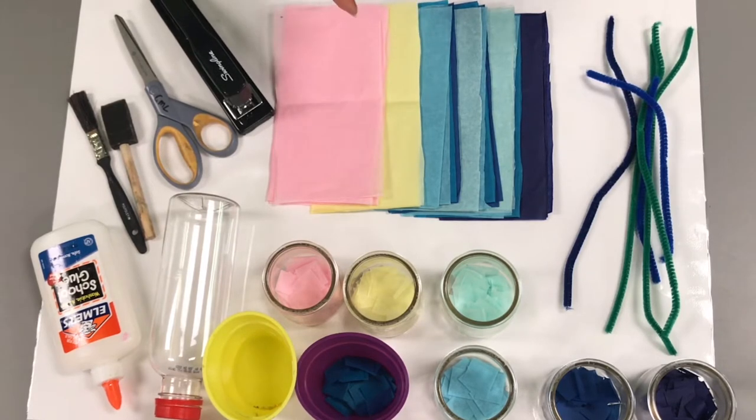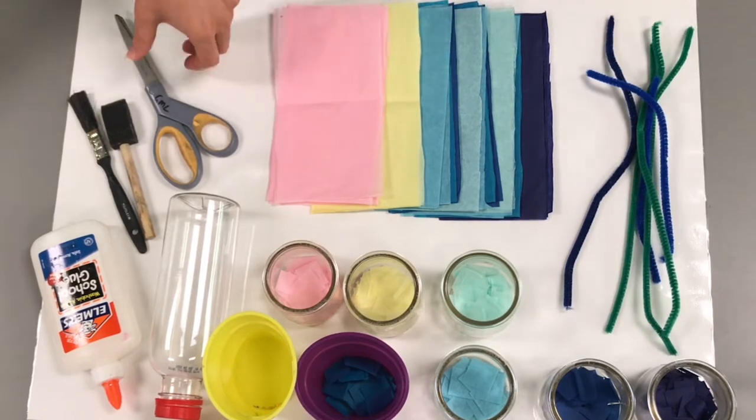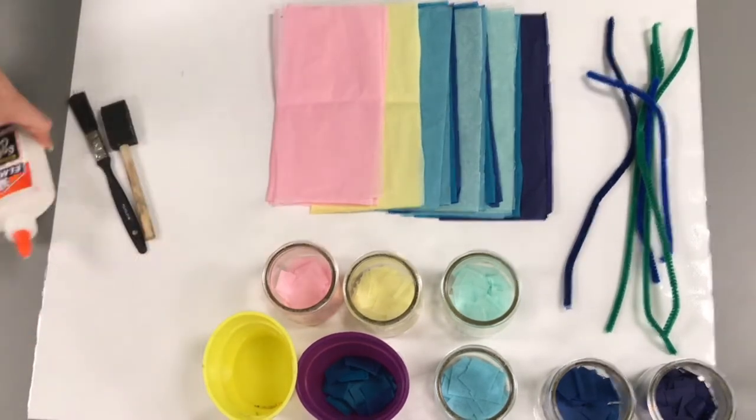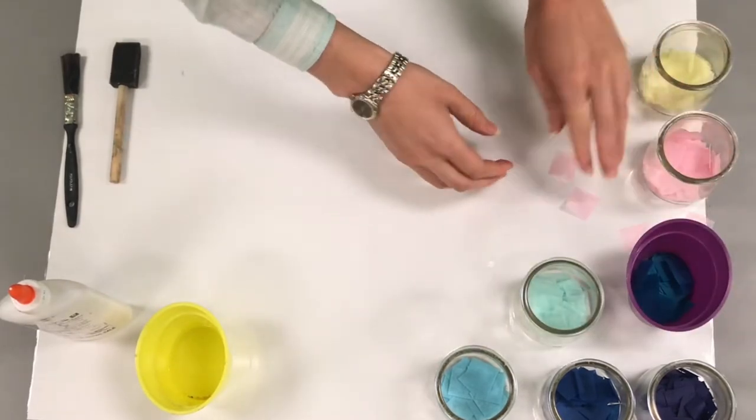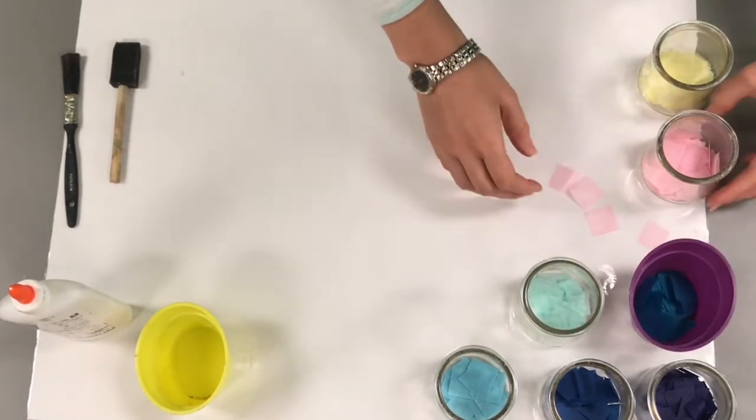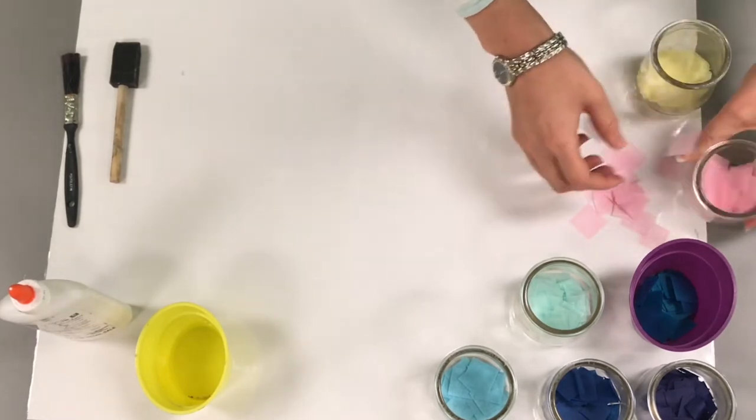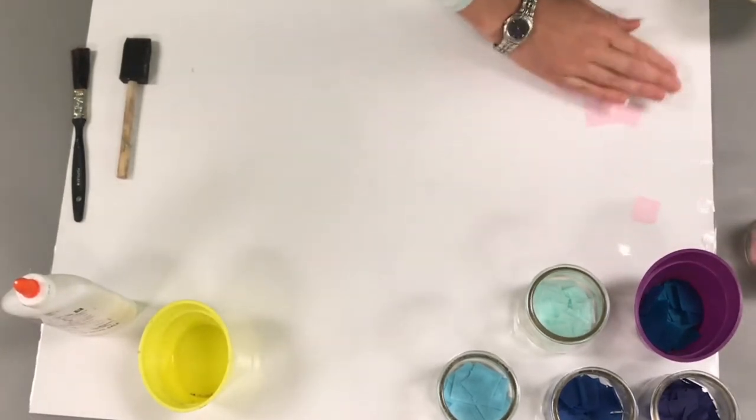So what we're going to do is decorate the bottle first. So let me clear this off. I'm laying out my different colored pieces of tissue paper so they're ready for the next step. And these were cut in roughly one inch by one inch squares.